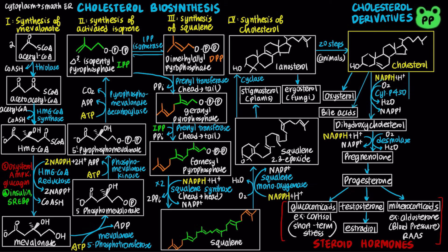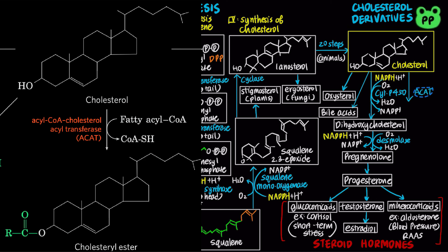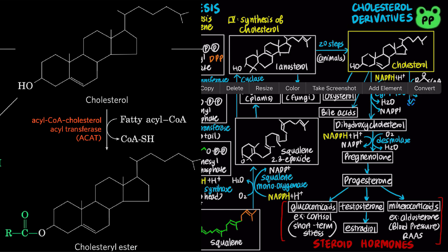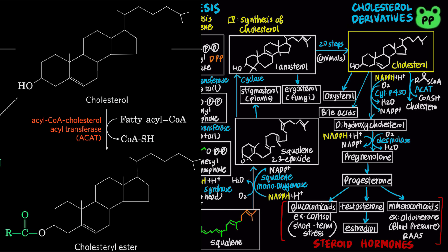Lastly, cholesterol can be converted to cholesterol esters through the action of acyl-CoA cholesterol acyltransferase, abbreviated as ACAT, which transfers a fatty acid from coenzyme A to the hydroxyl group of cholesterol. Cholesterol esters function in lipid storage and transport, which will be covered in a future video.